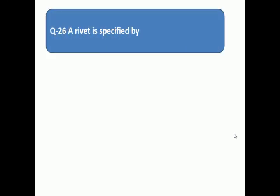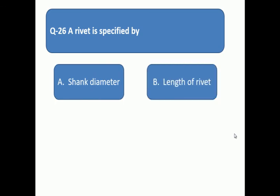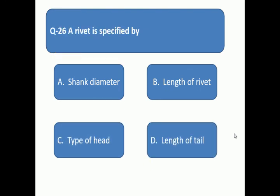Question 26: A rivet is specified by. Rivet is shown by which parameter? A: shank diameter, B: length of rivet, C: types of head, D: length of tail.